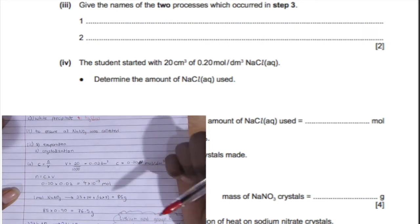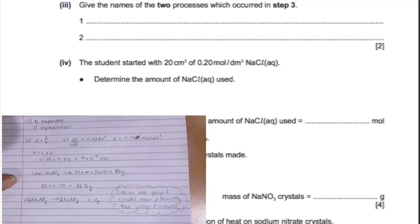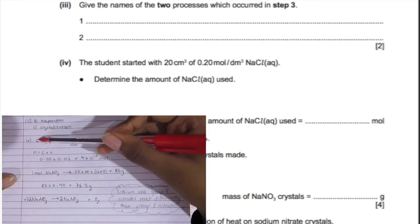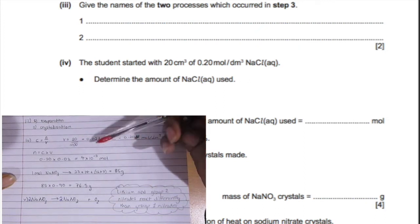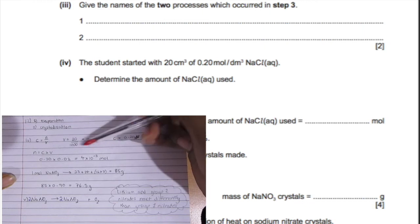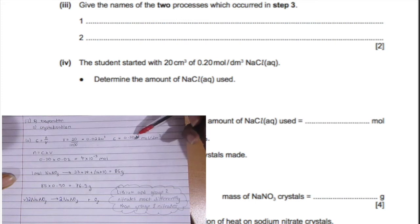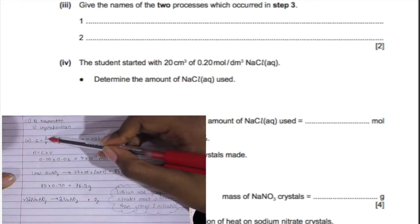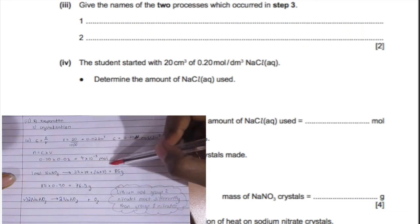The student started with 20 centimeters cubed of 0.20 moles per decimeter cubed of sodium chloride. Determine the amount of sodium chloride used. We're going to use the formula c equals n over v, which is concentration equals number of moles over volume. We have volume of 20 centimeters cubed, change that to decimeters cubed by dividing by a thousand. We have concentration of 0.20. Rearrange the formula to make number of moles the subject, which is concentration times volume, and the answer is 4 times 10 to the power of negative 3 moles.